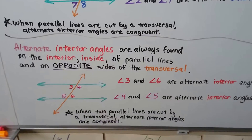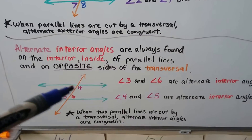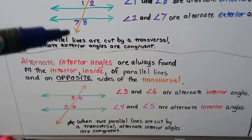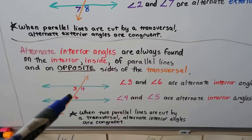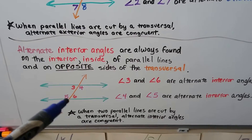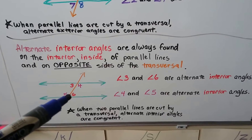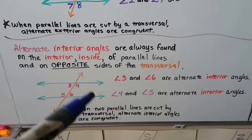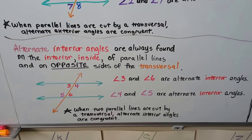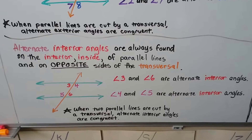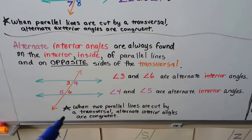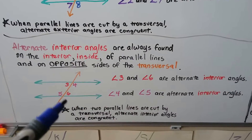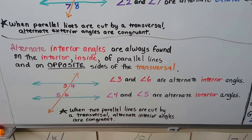Alternate interior angles are always found on the interior — the inside of the parallel lines — and they're on opposite sides of the transversal. Three and six are alternate interior angles, and four and five are alternate interior angles. They're going to have the same measure. When two parallel lines are cut by a transversal, the alternate interior angles are congruent. That's another theorem.